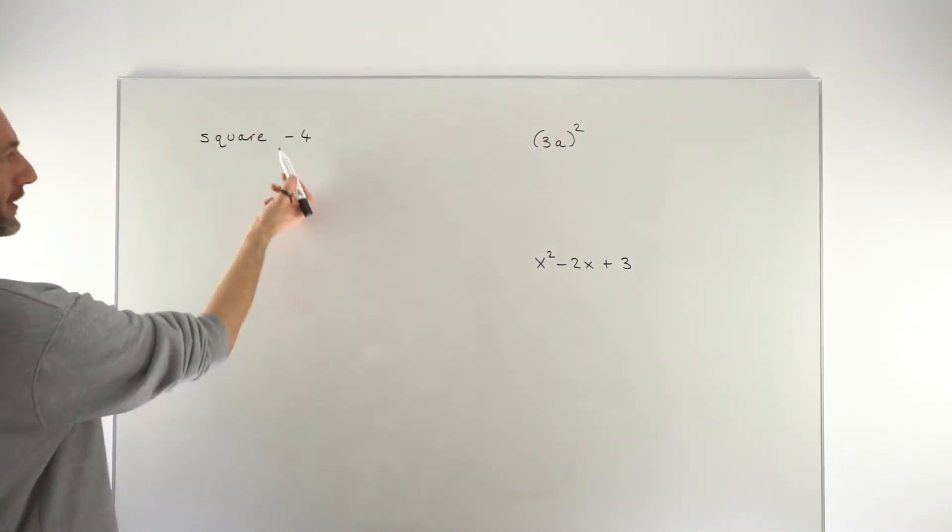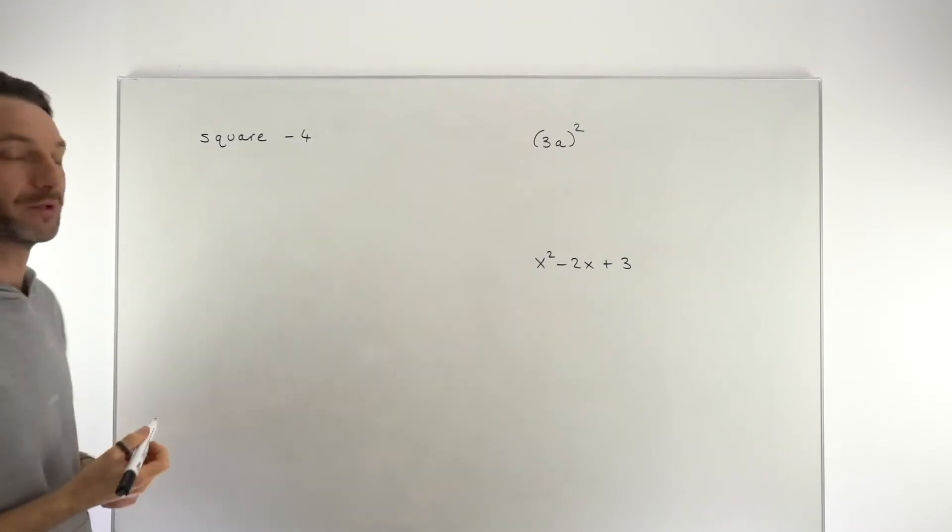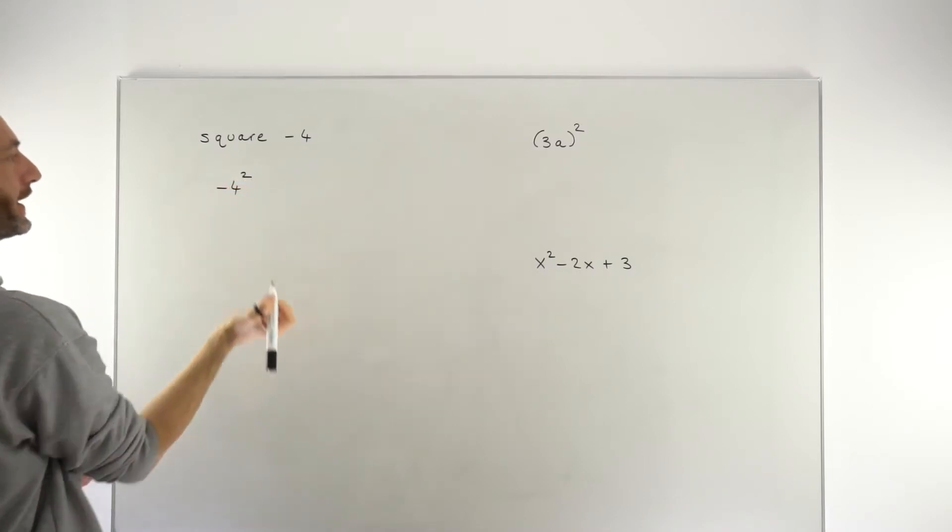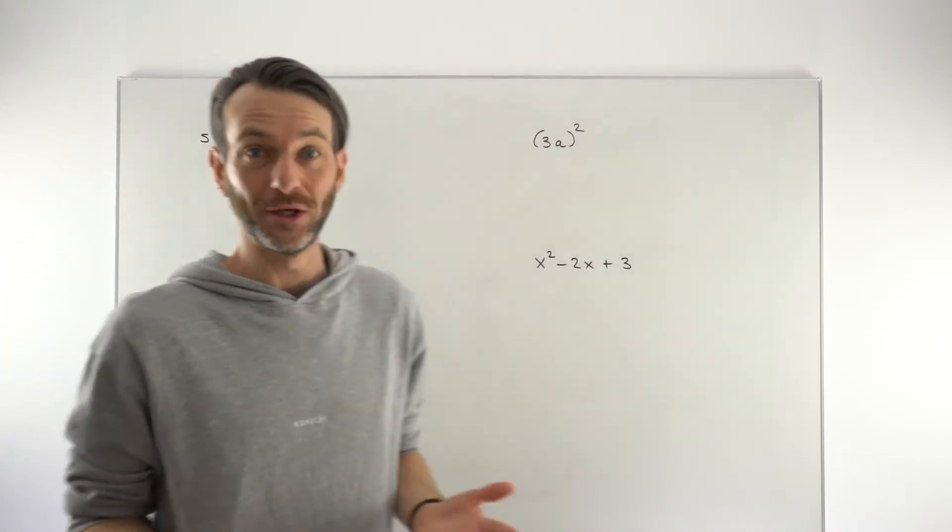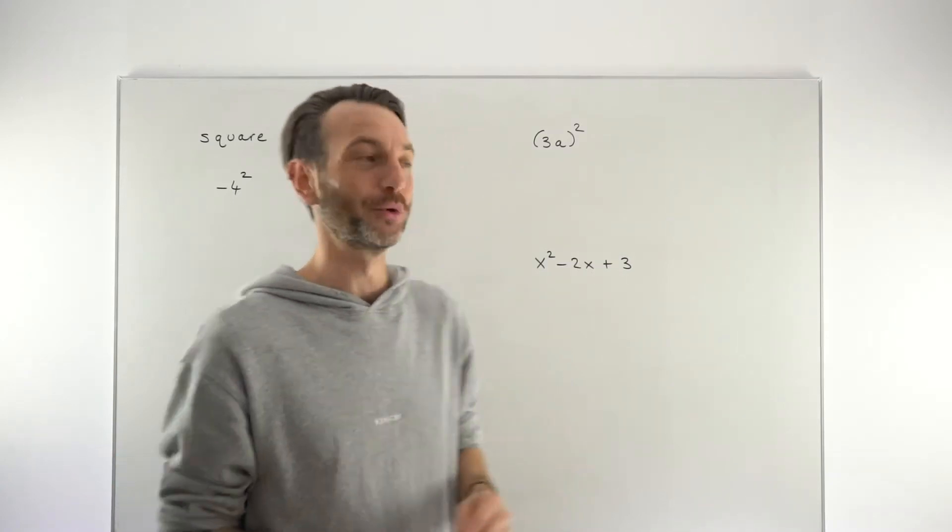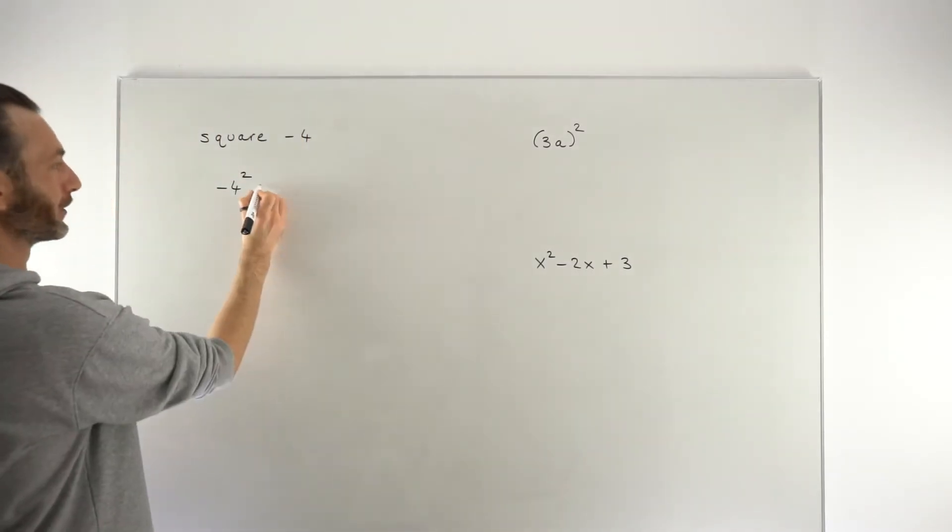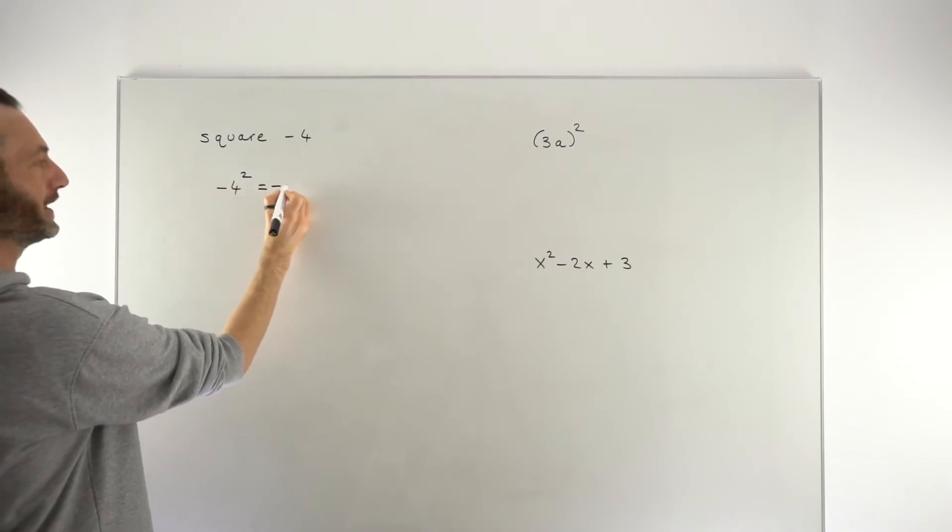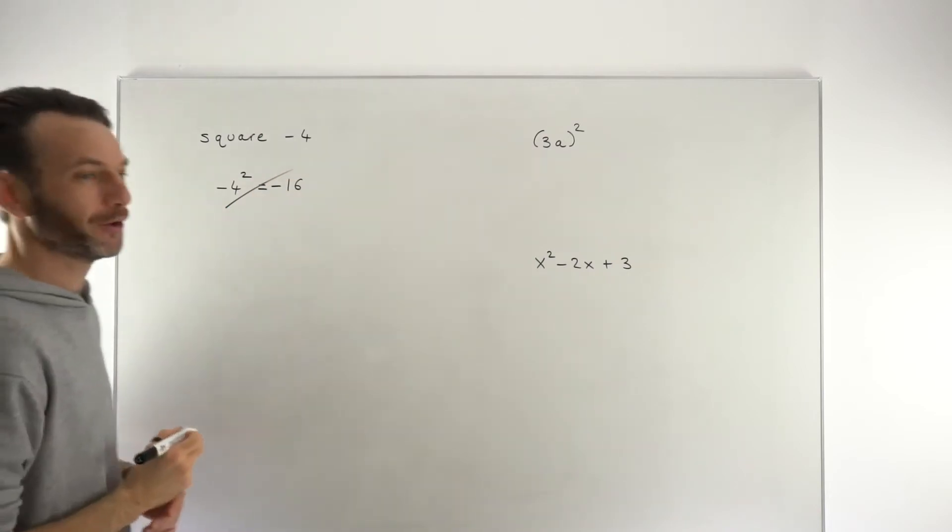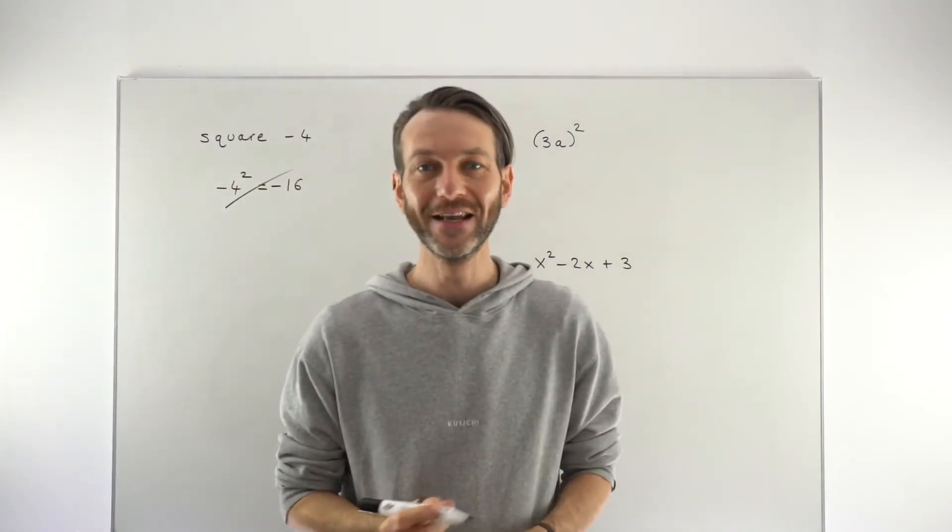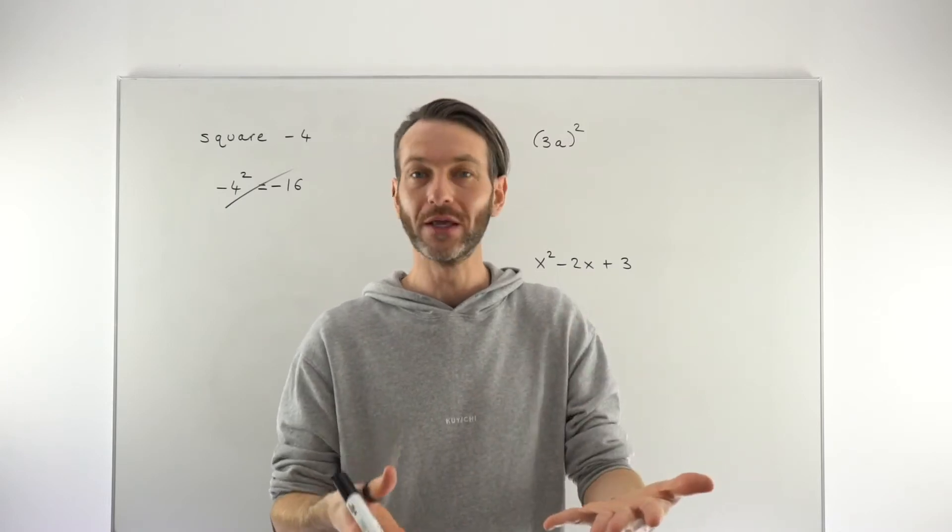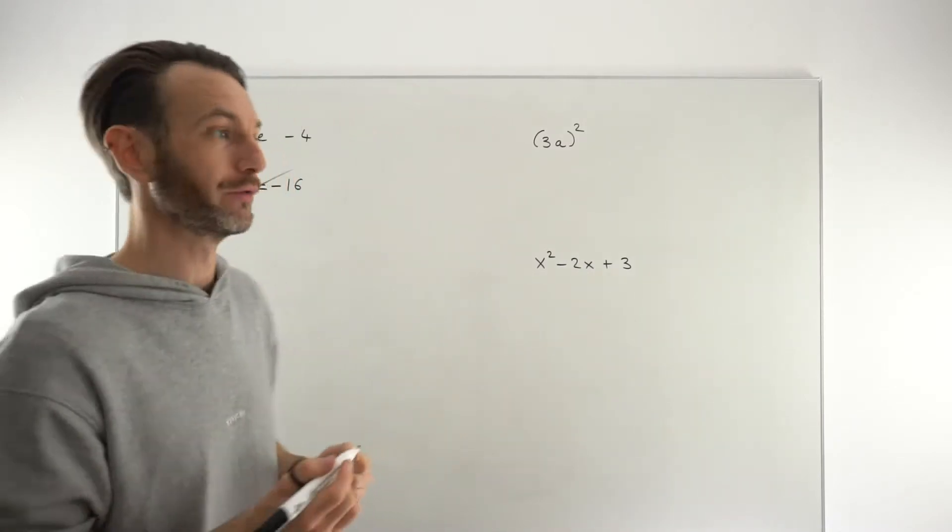So if I give a student, for example, the number minus 4 and ask them to square it, a lot of the time they will write down minus 4 and square it like that. And intuitively that seems kind of right because you take the number, you put a little 2 on it, and that means the number is squared. And proceeding from there, they'll say, okay, well, 4 squared is 16, so the answer has to be minus 16. But that, of course, is not correct because when you square anything, you multiply the thing, the number, the algebraic term, whatever it is, to itself. That's what squaring really means.